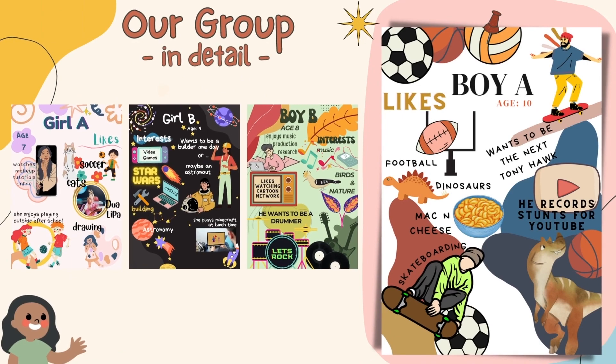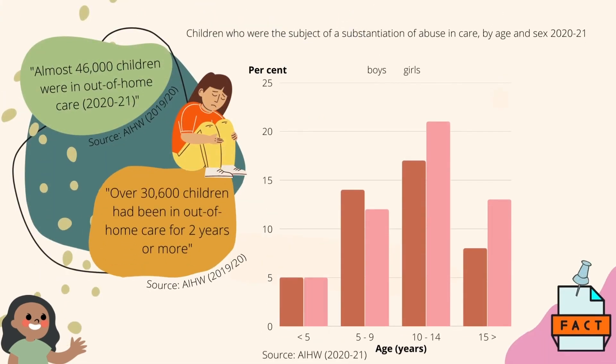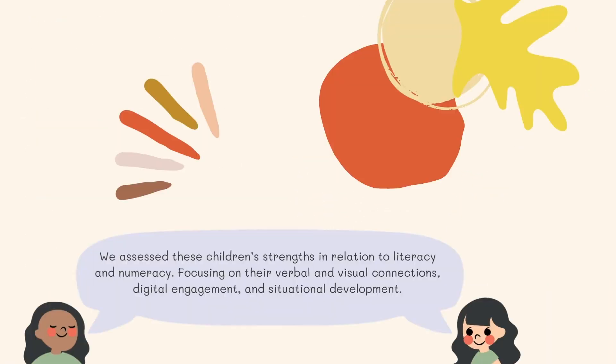Additionally, they have experienced at least two changes in both out-of-home care placement and in school. Our focus group imitates real-life situations drawing from statistical research conducted by the Australian government. This data formed the parameters of our case study, such as the percentage of children within out-of-home care, the length of time in out-of-home care services, and the reason for intervention and foster placement.